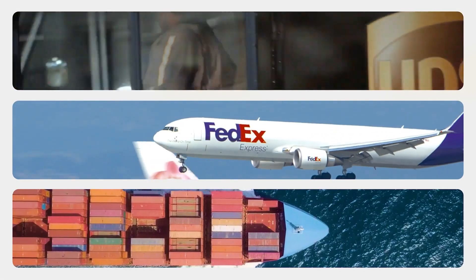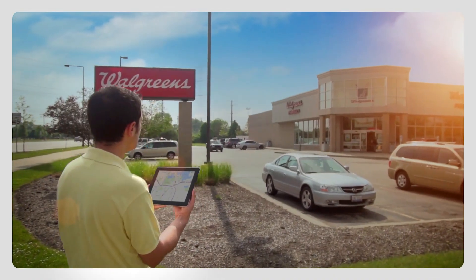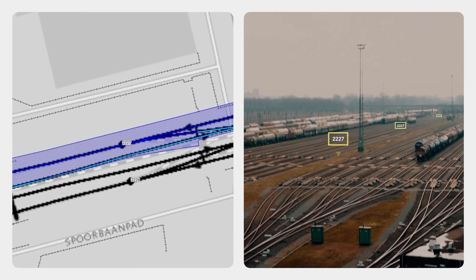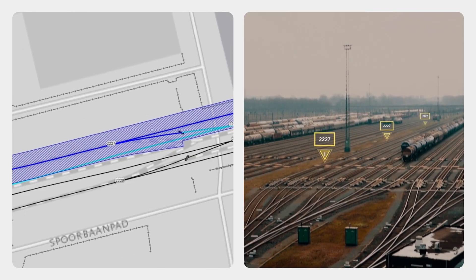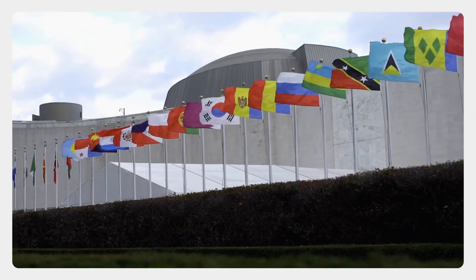Whether you've heard of GIS or not, it's all around us. It's used by every major corporation to manage their supply chains and to pick where to build stores. It's used by utilities, by transportation companies, by every governmental body. But it's also about what's happening in your neighborhood and your community, which is why it's kind of remarkable that so few people know about it.